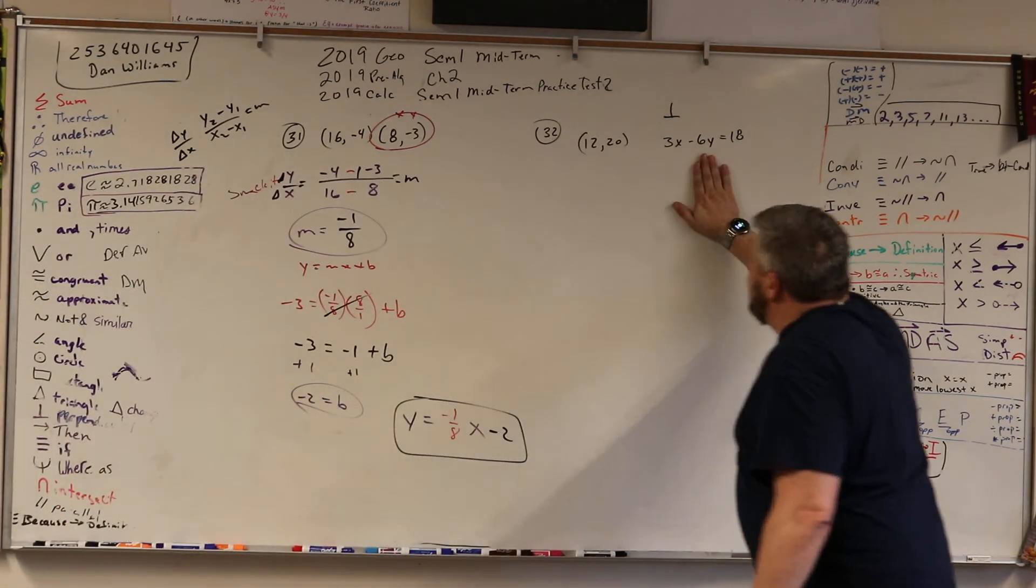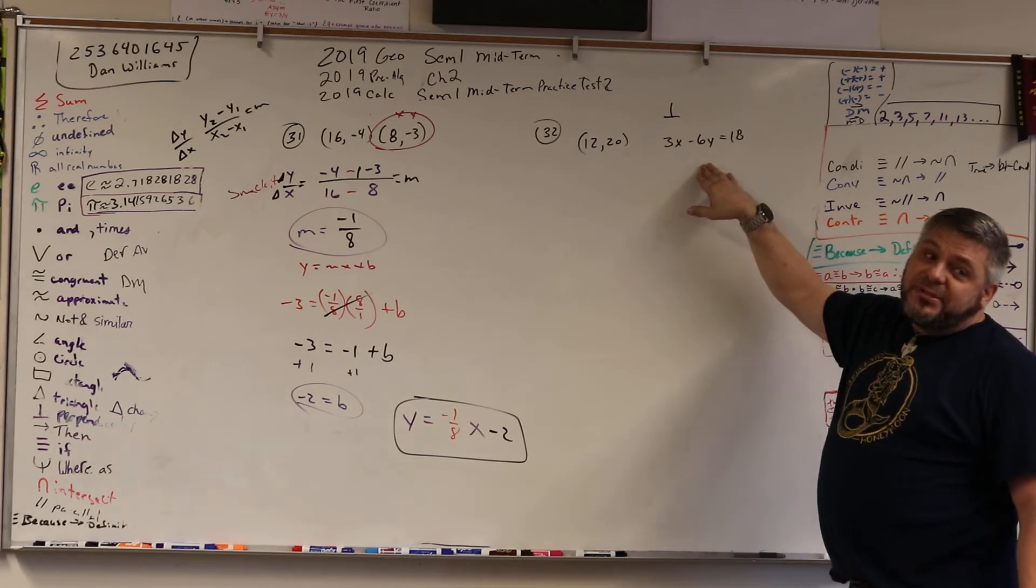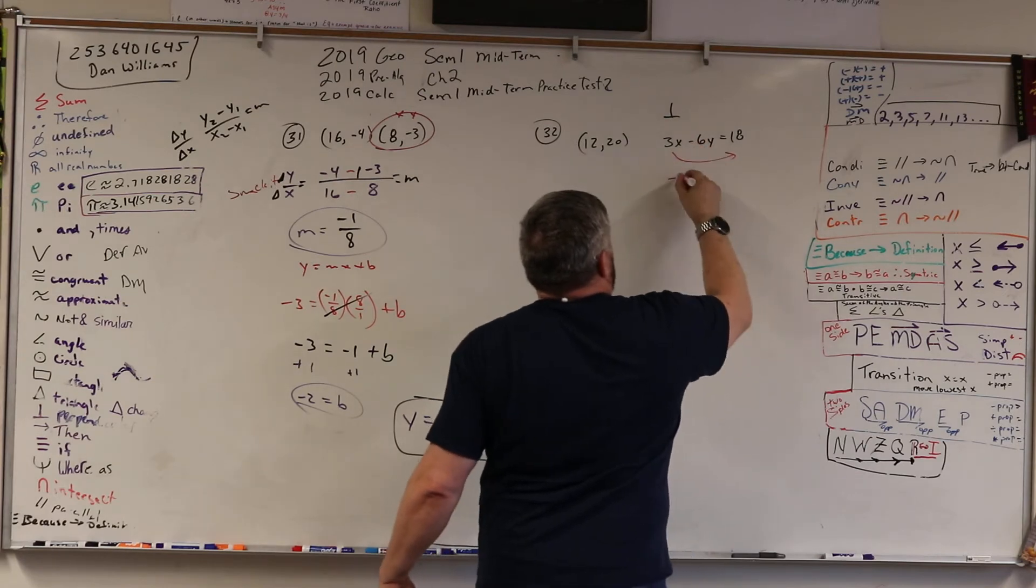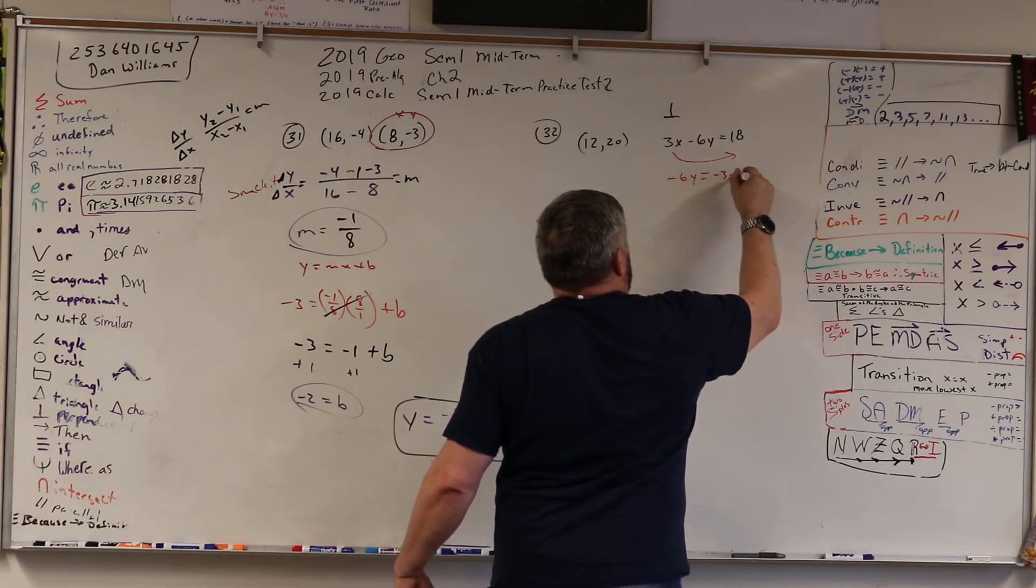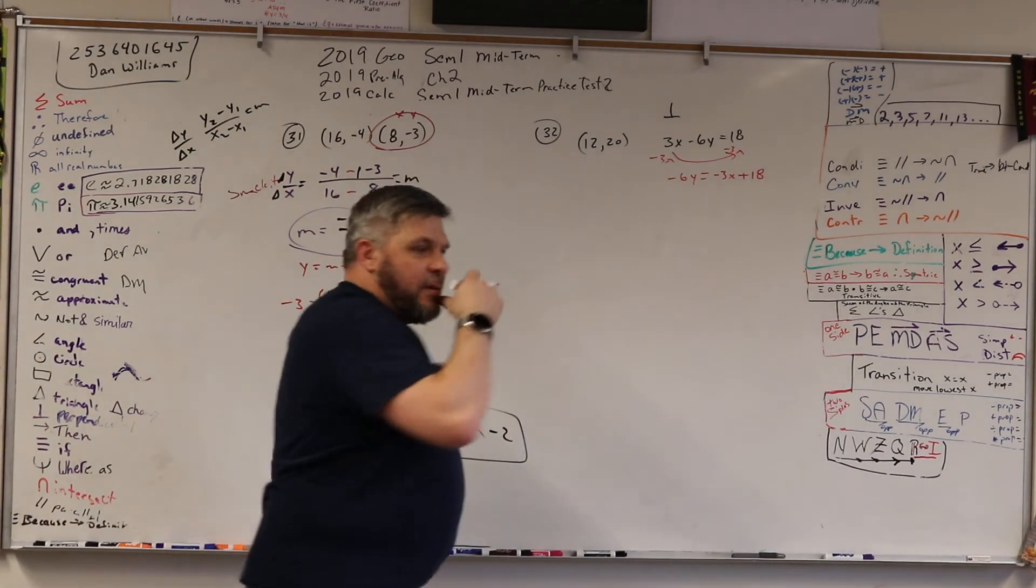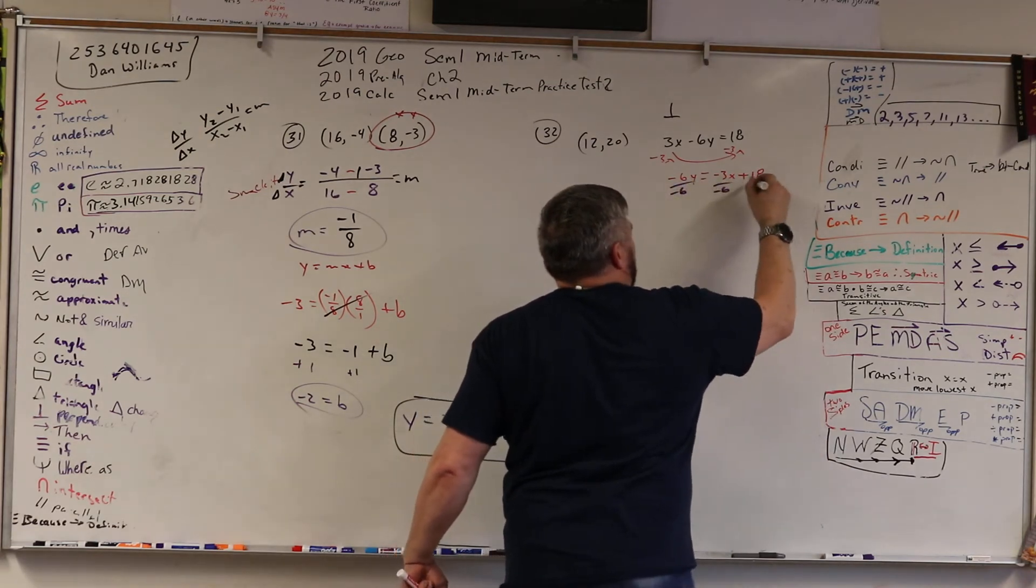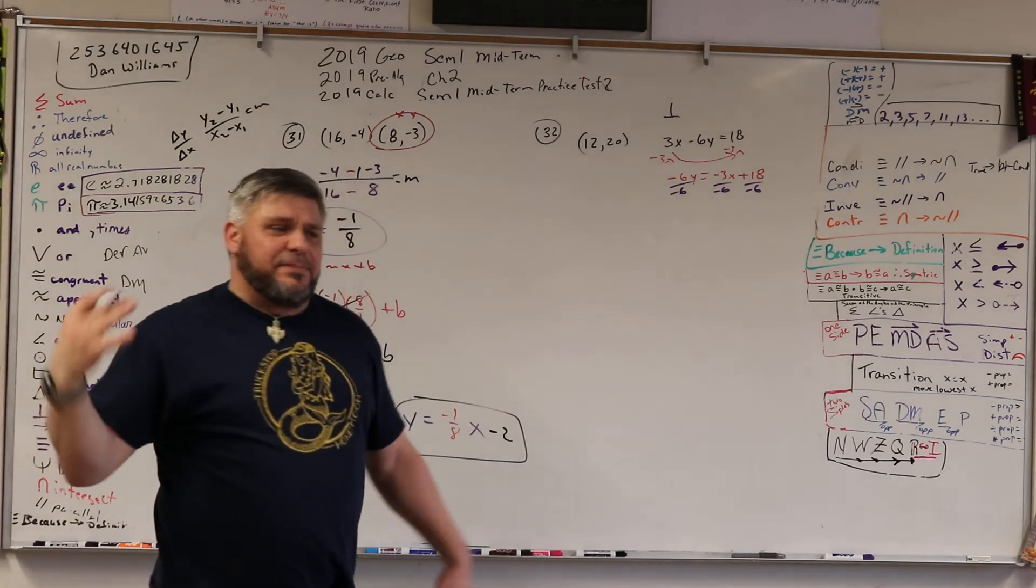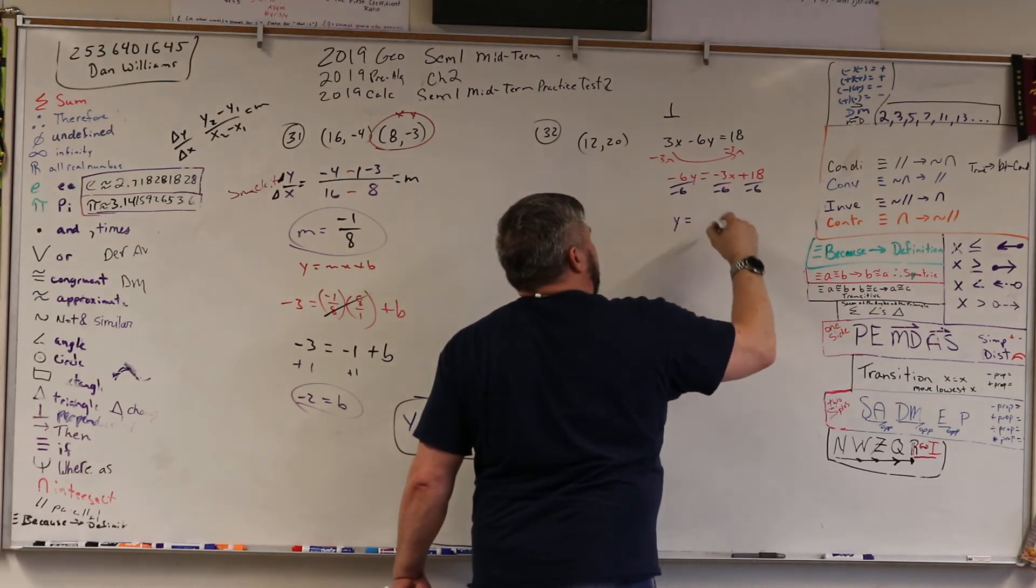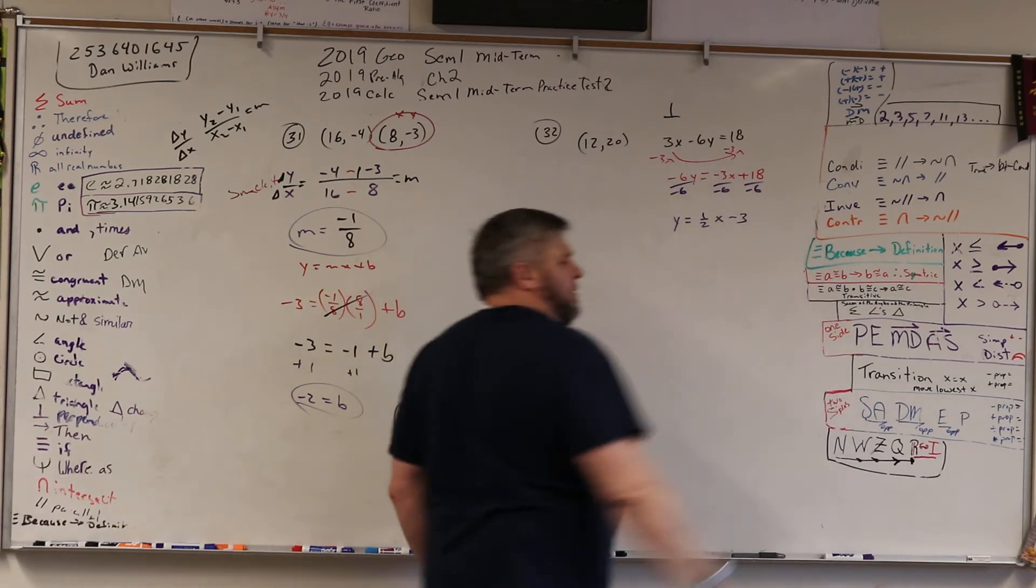But first, if we want a line that's perpendicular to this one, we have to figure out what this slope is. So the first thing's first is I need to move the x. So I got negative 6y equals negative 3x plus 18, or in other words, minus 3x. And then I need to divide by negative 6. Everybody on the block gets the paper. So we're going to come up with y is equal to 1/2 x, and then that looks like a minus 3.